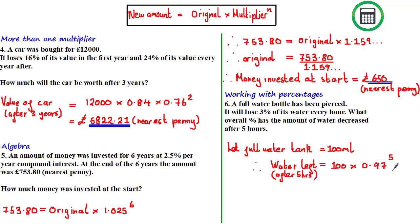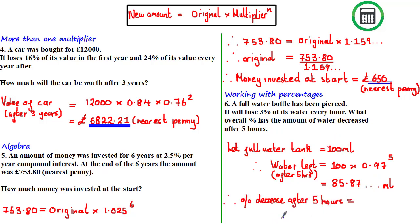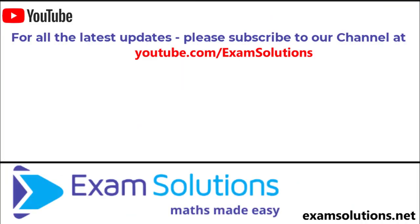Working this out gives 85.87... ml remaining. The decrease is 100 − 85.87... = 14.13%. Therefore the overall percentage decrease in water after five hours is 14.13% to two decimal places.